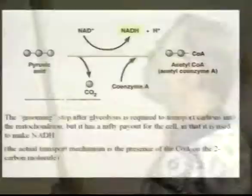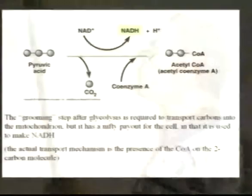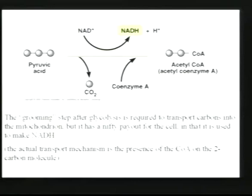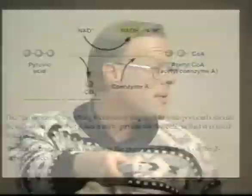In this process of grooming, to transport these acetyls into the mitochondrion, two ATPs are used. That's very important to remember because it accounts for the difference in ATP production in prokaryotes versus eukaryotes like us. We use two ATPs to get that acetyl into the mitochondrion — it's actually the pyruvate that's being brought in. We've got our carbons now in the matrix of the mitochondrion, ready to do the Krebs cycle.